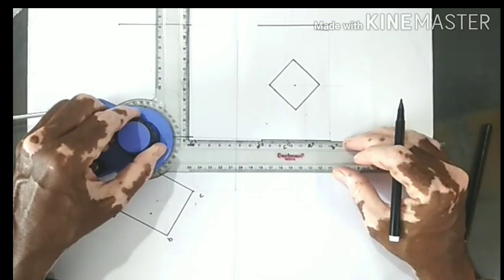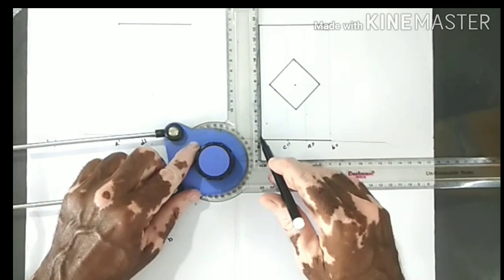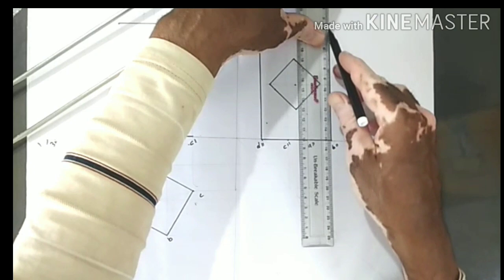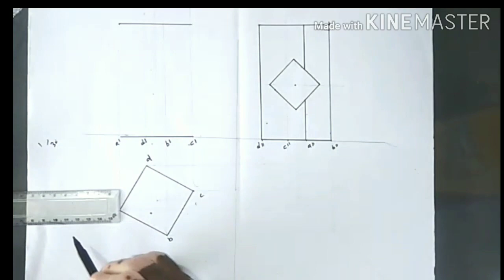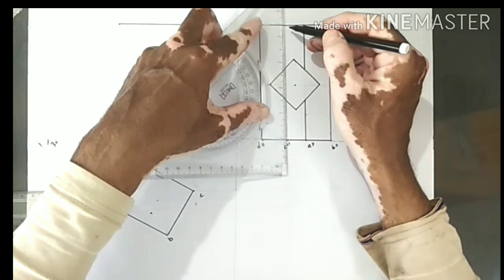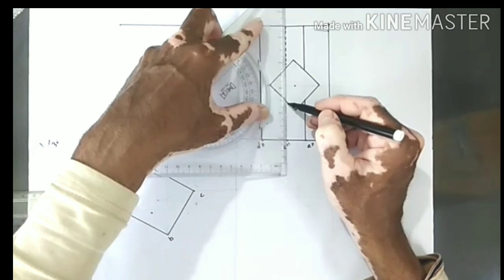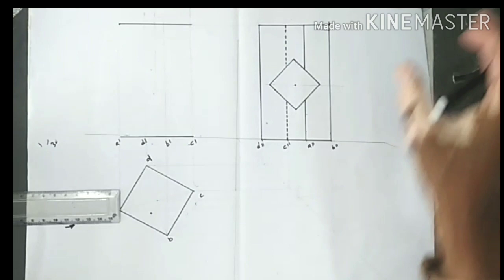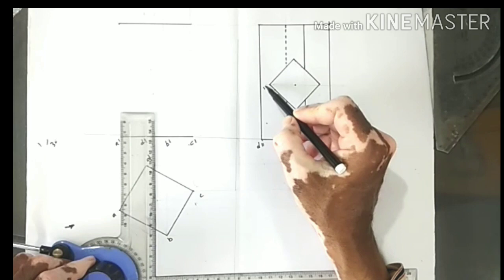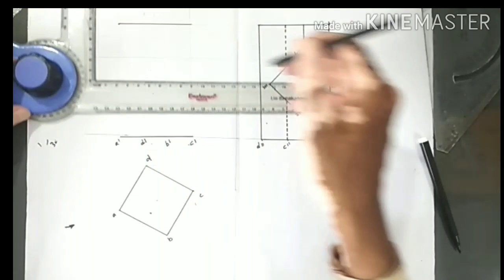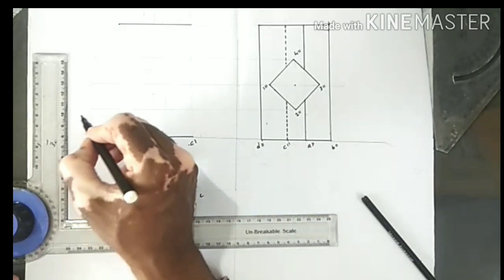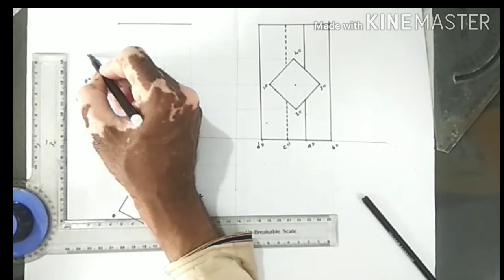Now determine which longer edges are visible or not visible. Edge N will be drawn dark. You are seeing from this side, so edge A is visible and edge C is invisible because edge C is farther from the observer and edge A is nearer. We give numbers 1, 2, 3, 4 to the square hole and project this square in the front view as well as in the top view. So this is 2 dash, 1 dash, 3 dash, and 4 dash.